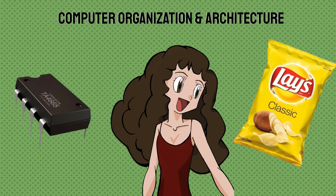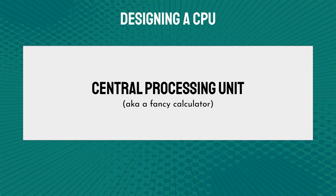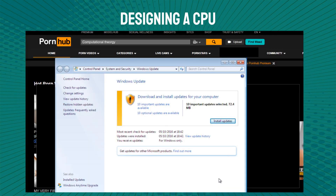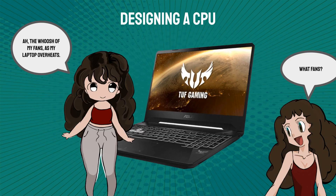Next is computer organization and architecture, which is a close-to-the-chip field of study. This field includes designing the CPU, or central processing unit. This unit has two main purposes: one, calculating when the most inconvenient time is to do a Windows update, and two, warming your lap so you can feel some form of external heat in your genitalia.